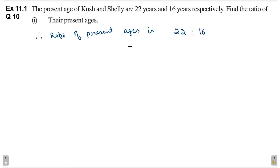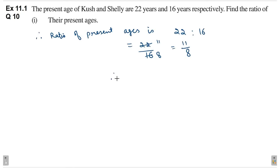This is equal to 22 divided by 16. So, dividing both numbers by 2, this is 11 divided by 8. Therefore, ratio is 11 is to 8.